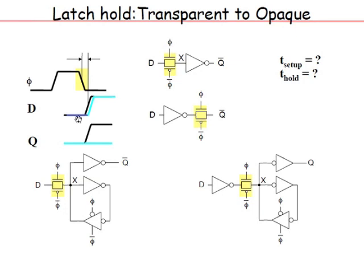Hold time means you must set up the data well before the clock edge and hold it for a short time after. Setup and hold times are related to propagation delays through the latch — both the data and the transmission gate switching simultaneously. In a simpler latch, setup and hold times will be faster because there is less delay, whereas a latch with an input inverter has more delay in the path, leading to larger setup and hold times.